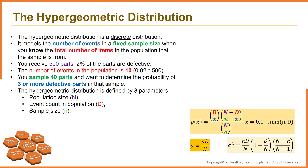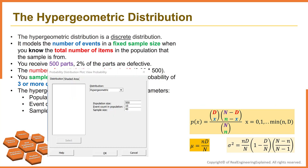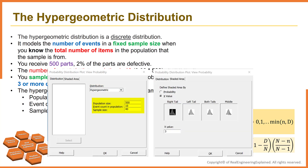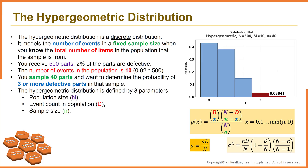In Minitab, we can easily find the answer. Go to the Graph menu, then Probability Distribution Function. Select hypergeometric distribution from the drop-down menu. Enter 500 for population size, 10 for event count, and 40 for sample size. Go to the Shaded Area tab, select x value and right tail, and enter three or more defective items. Hit OK. As you can see, the total probability is around 3.84%.